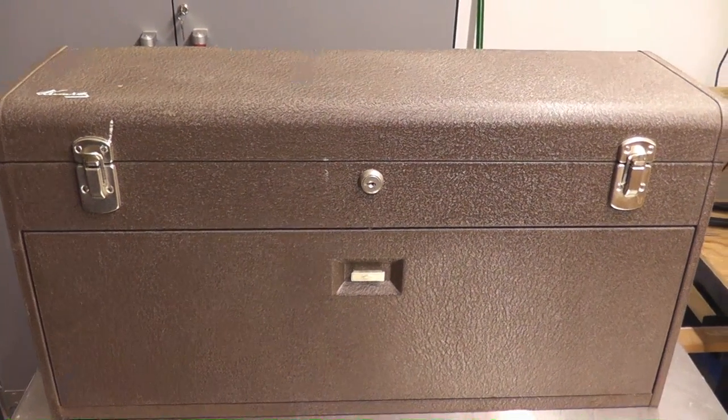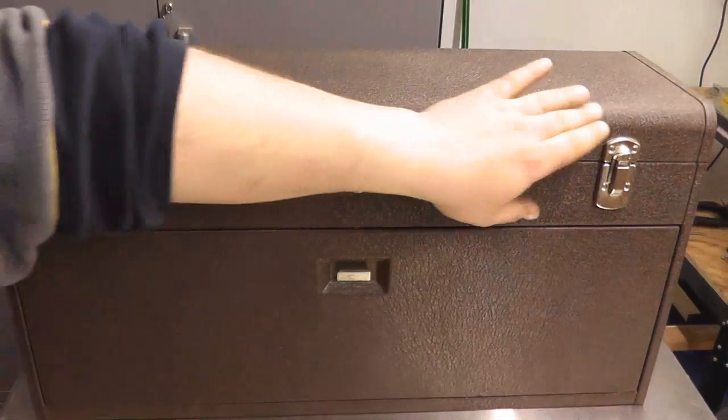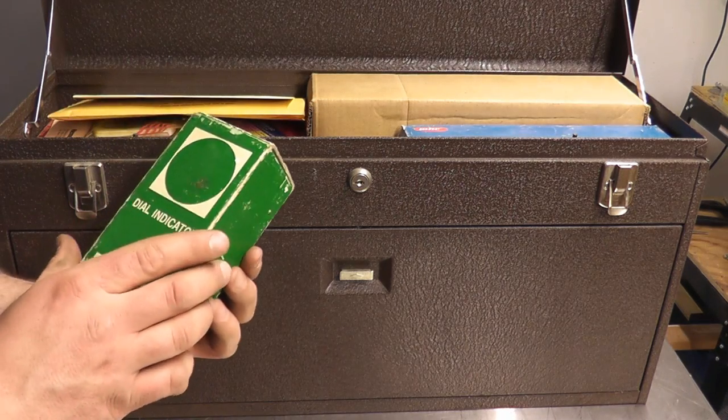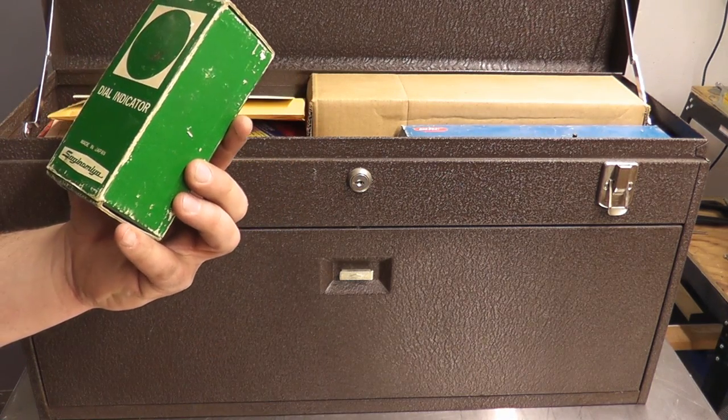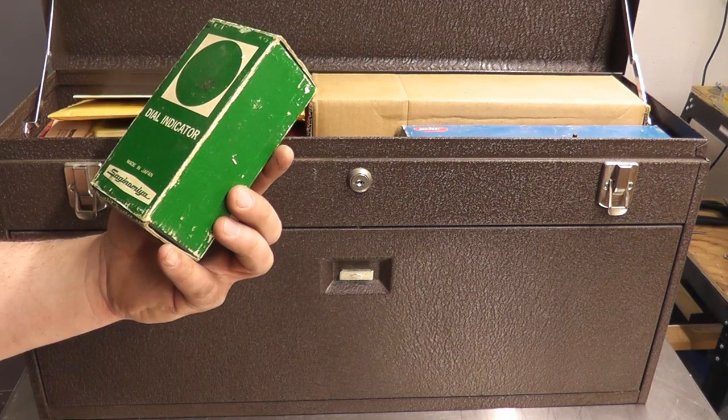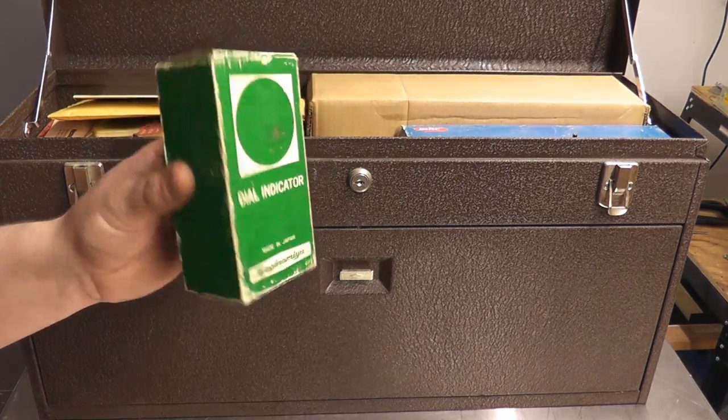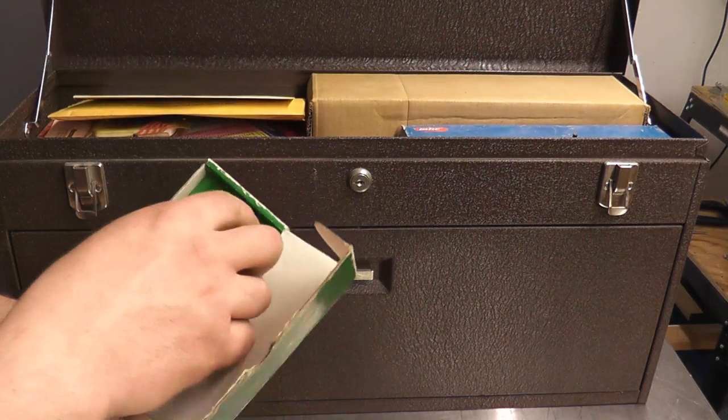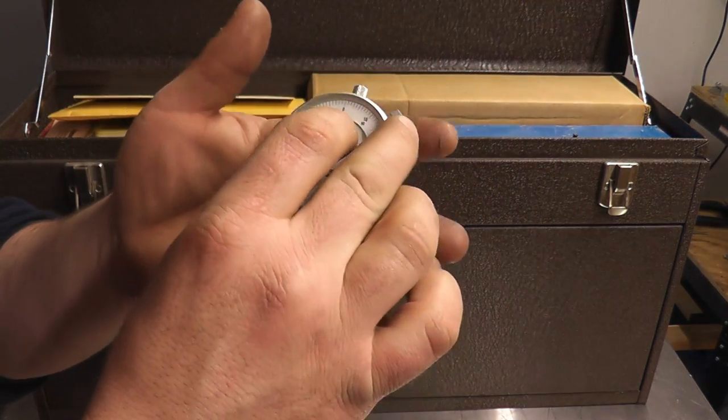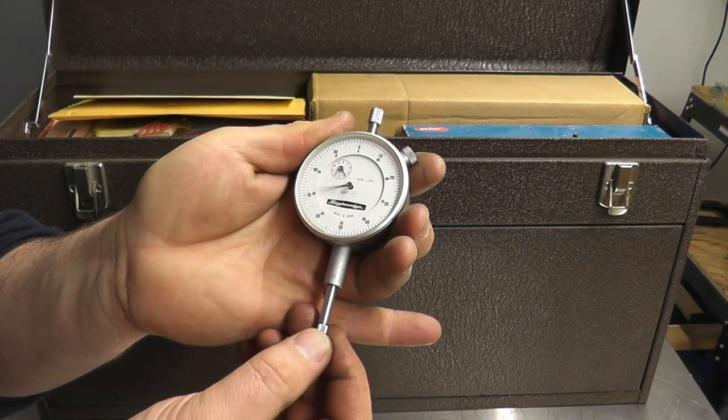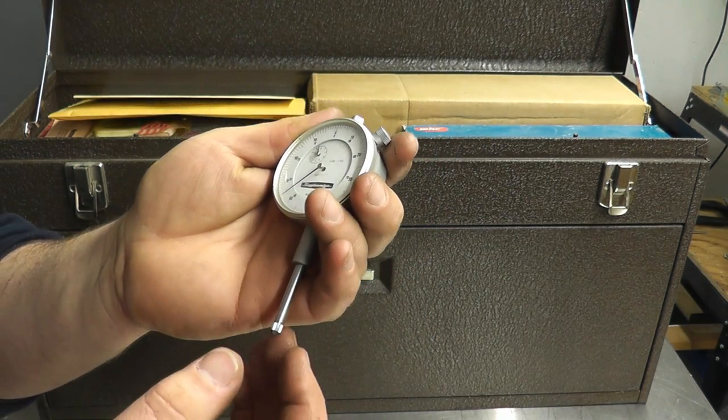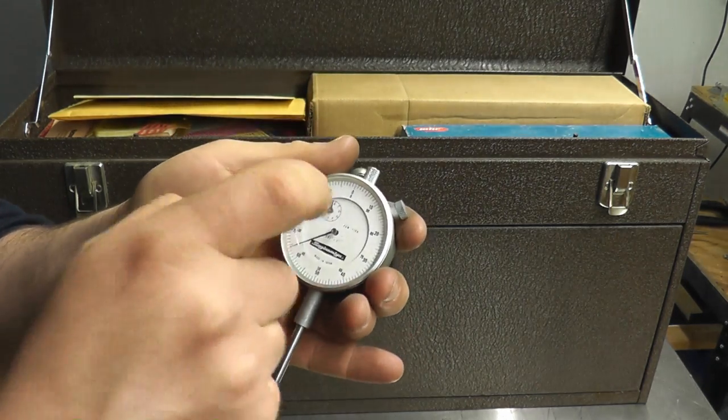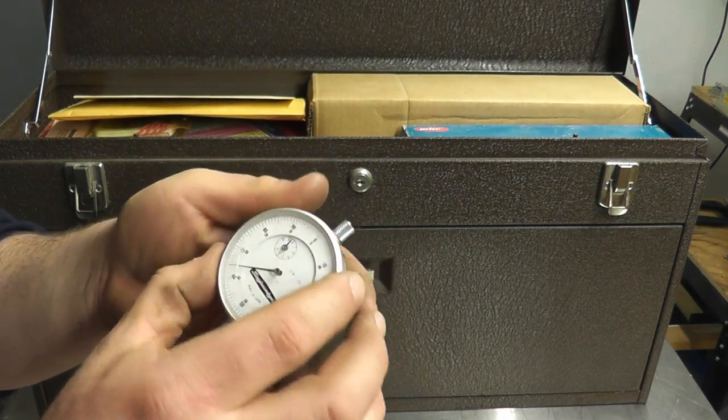Okay, so here we have a Kennedy 12-drawer toolbox. We've got some stuff up top here. We have a dial indicator made in Japan, Saginomiya. Actually pretty nice looking indicator, very smooth. There's a little scratch in the crystal right there, but other than that it works pretty nice.